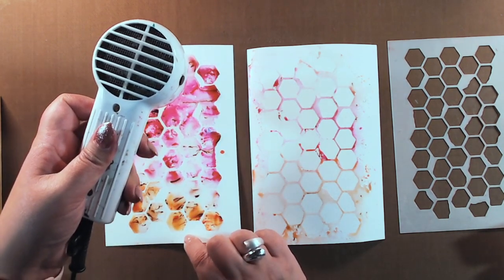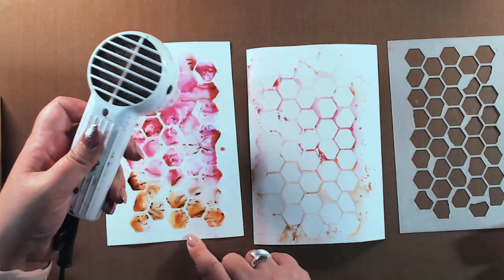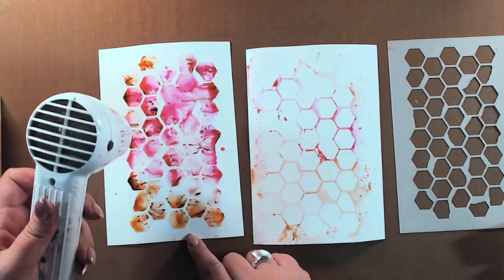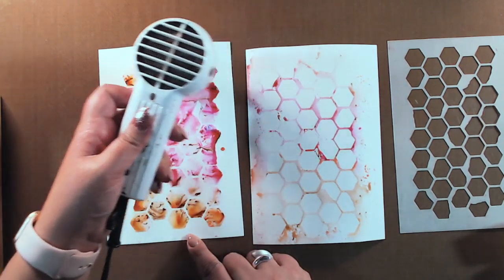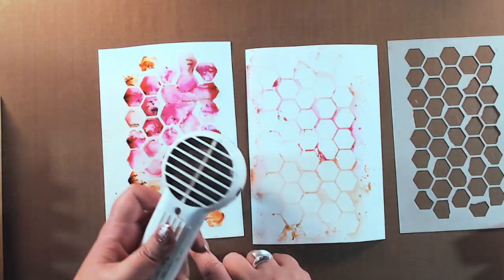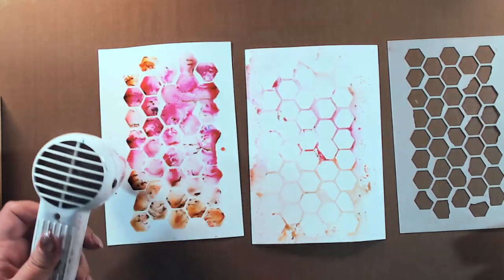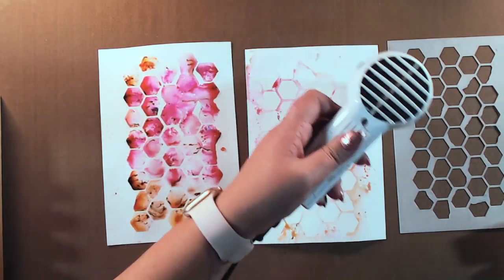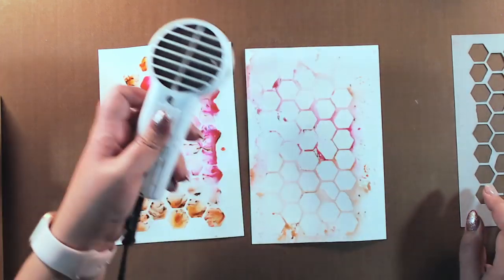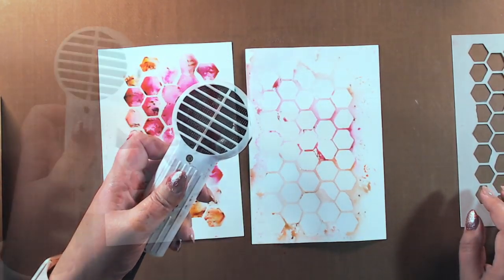Depending on how long I let the components interact with the water, I'll get more or less coloration from the walnut stain. As I want to maintain color here and not have too much of the vintagey walnut stain effect, I'm stopping the process by going in with my heat gun.